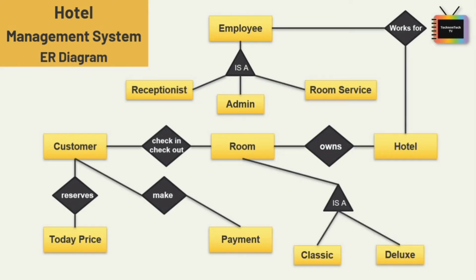Now let's see the cardinality ratio between these entities. Many employees work for one hotel, and one hotel owns many rooms. Next, one or many customers check in and check out of one or more rooms. One customer reserves many rooms according to today's price, and one customer can make multiple payments. This is the cardinality ratio between these entities.